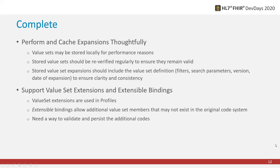Regarding value set extensions and extensible bindings, value set extensions are commonly used in FHIR profiles. An extensible value set binding is a little bit more flexible than a required value set binding. It allows for the use or addition of more codes or terms that may not have existed in the original code systems that the value set was drawn from, but may be needed for the purpose of a particular profile. So especially when working with profiles, you'll need a mechanism to validate and persist any of those additional codes that come from value set extensions.